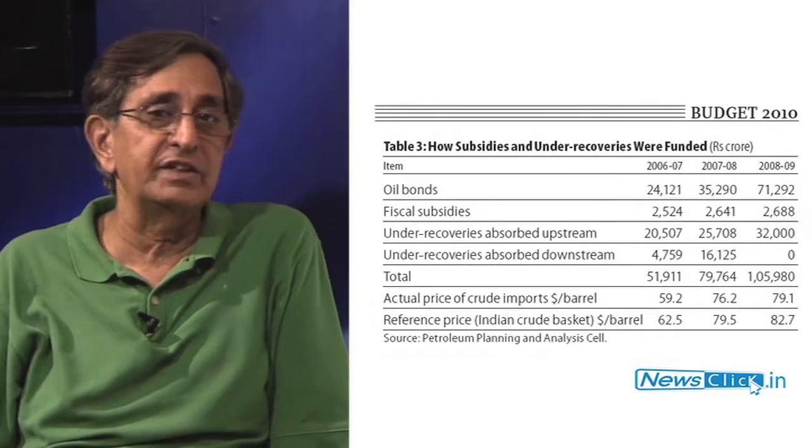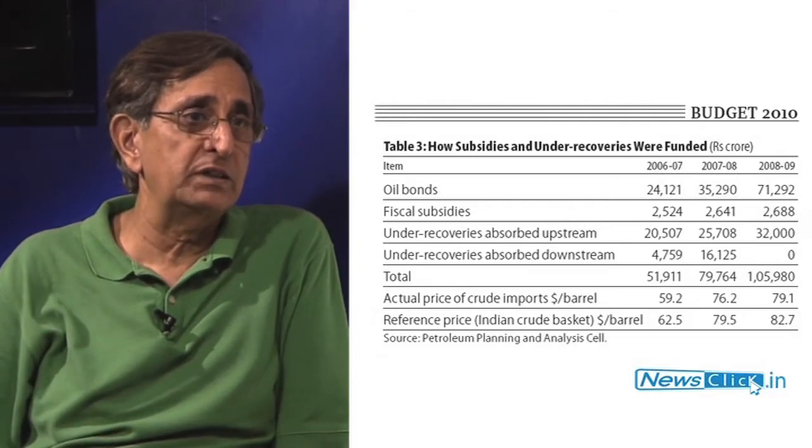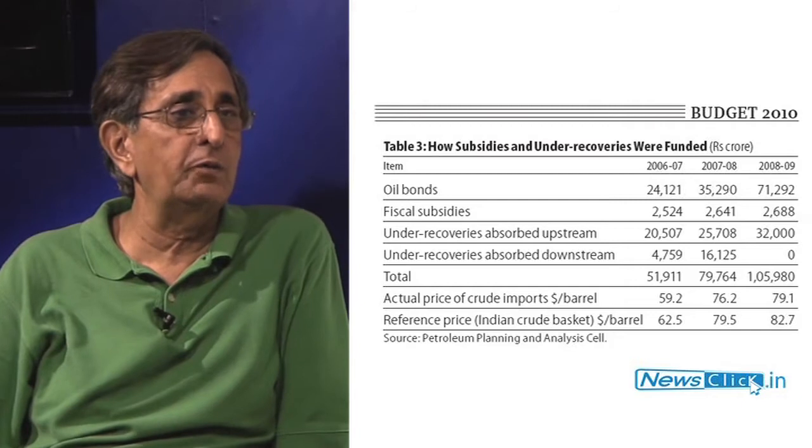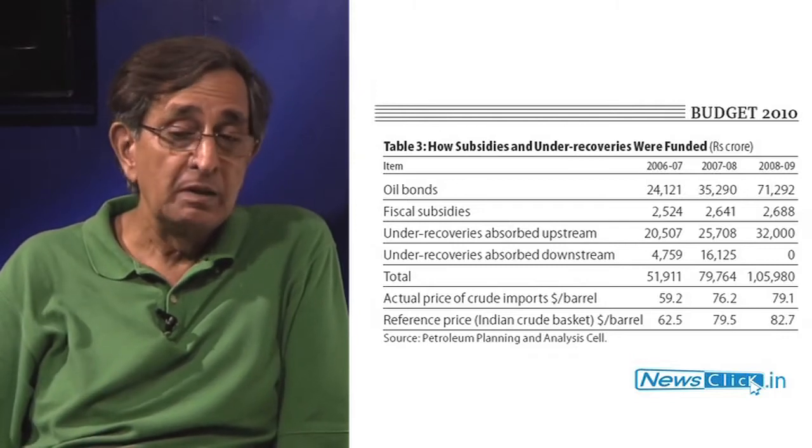The logic of under-recovery — if they were losing money, then how can the same government turn around and say that the upstream companies absorb one-third of that under-recovery, downstream companies absorb one-third, and the government will pay the balance one-third out of government bonds? Originally they were paying with government bonds; recently they have said they will not pay in cash, but that has so far not happened.